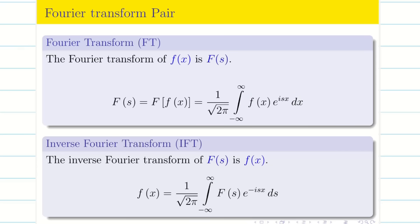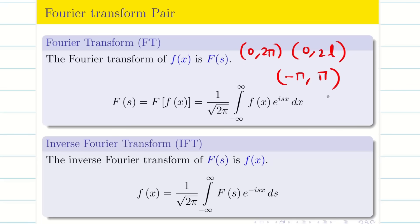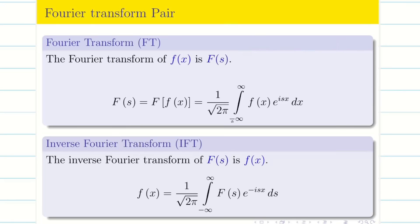Remember, students: in Fourier series we deal with intervals like 0 to 2π, 0 to 2l, minus π to π, minus l to l, etc. But in the Fourier transform we are always moving over the real line, that is from minus infinity to plus infinity.